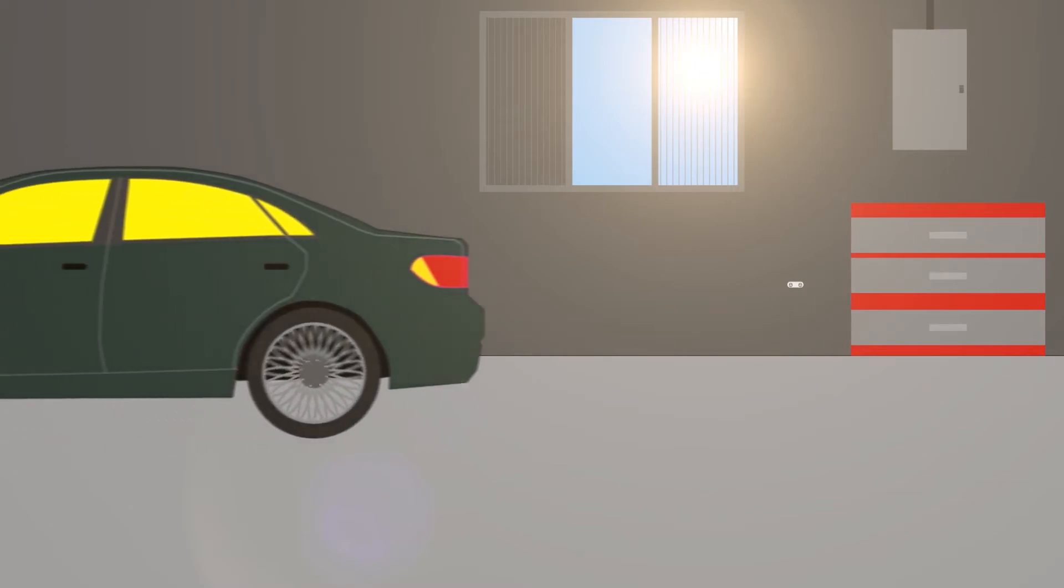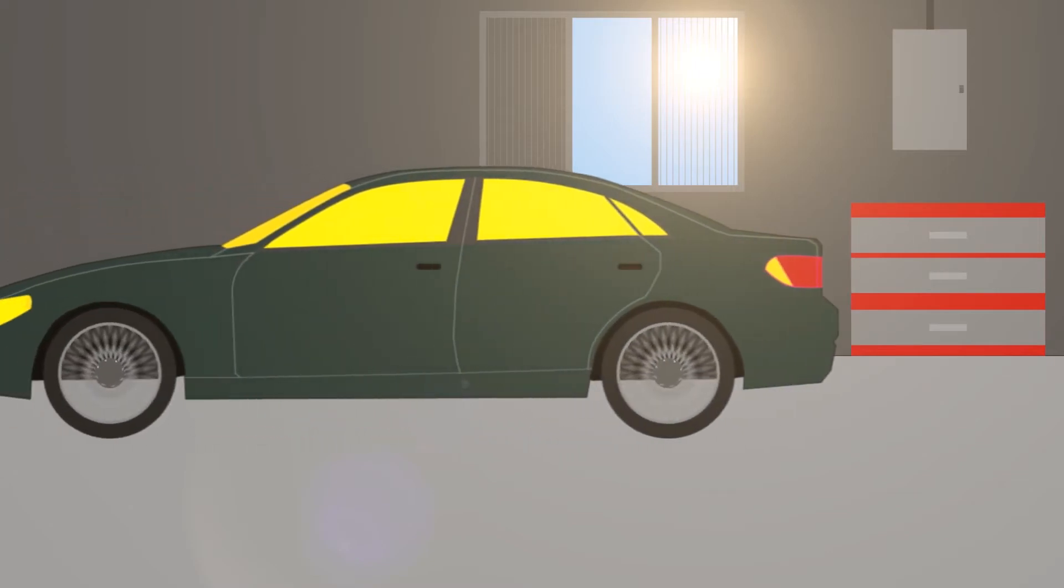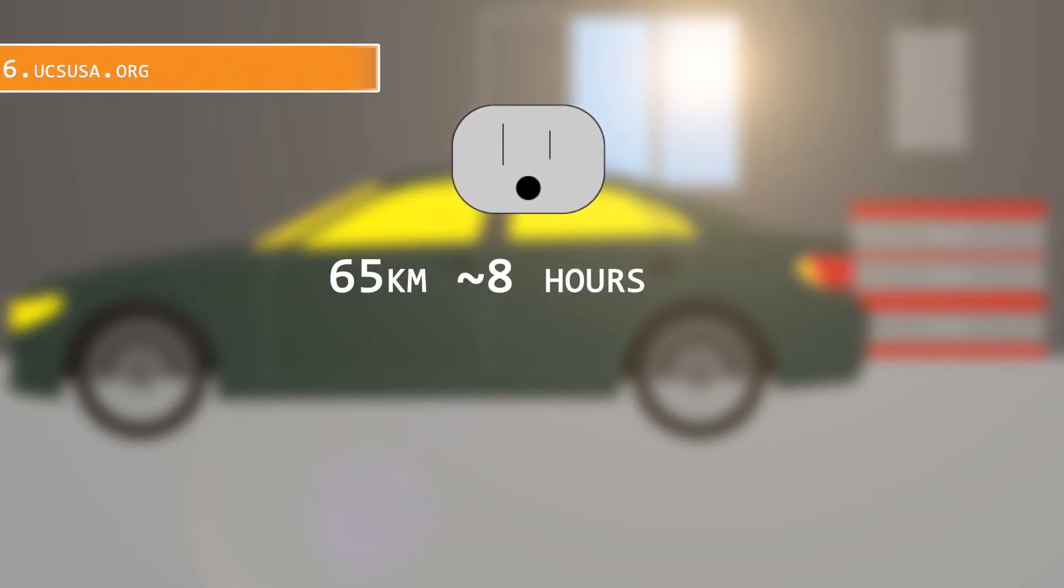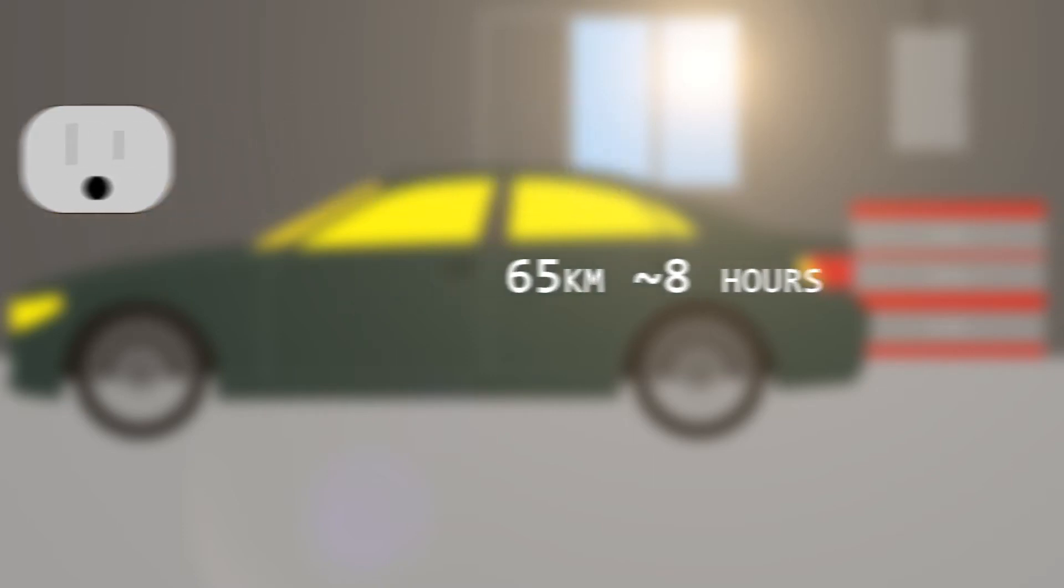Most EVs can be charged on normal mains power, it just takes a while. Charging on 110 volts, your standard grounded wall plug, you should be able to charge about 65 km of range in about 8 hours. This is called level 1 charging.